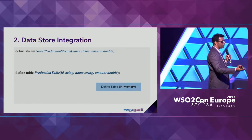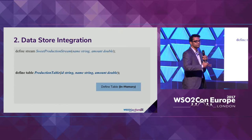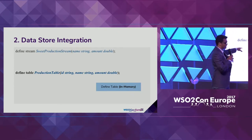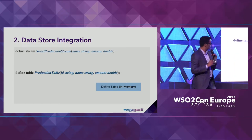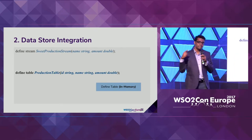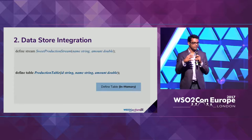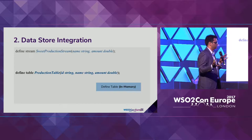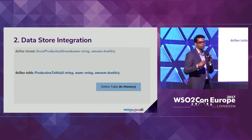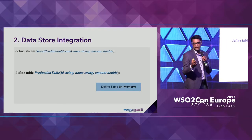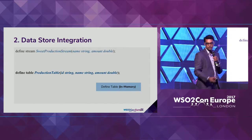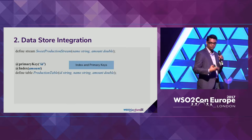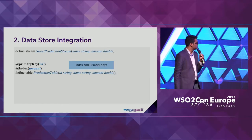We define a table — not a stream, but a static structure. The same way we define a stream, we can define a table. By default it's an in-memory table, meaning all data lives in memory and is lost if the server goes down. This is useful for internal caching. You can add primary keys and indexes to improve search performance on these caches.